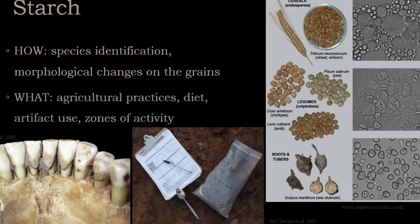Oftentimes the same sample can be used for the analysis of all three types of micro-remains: pollen, phytoliths, and starch grains.